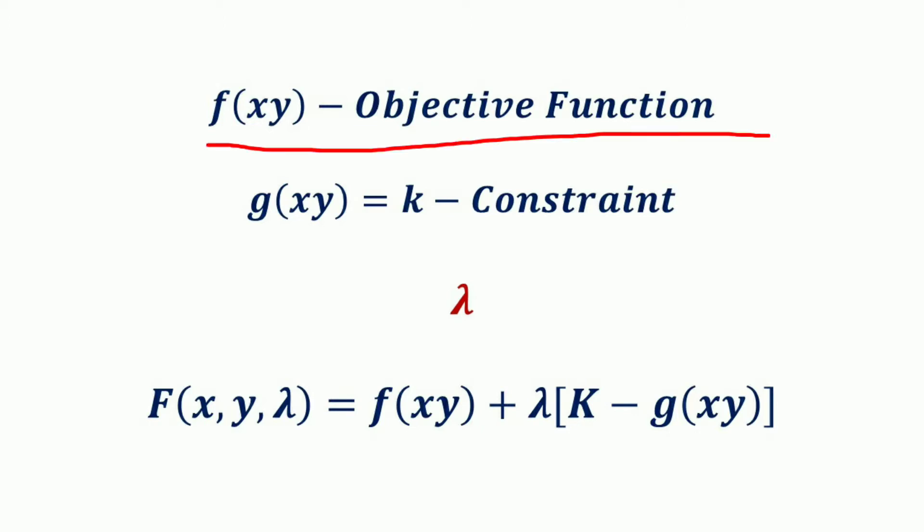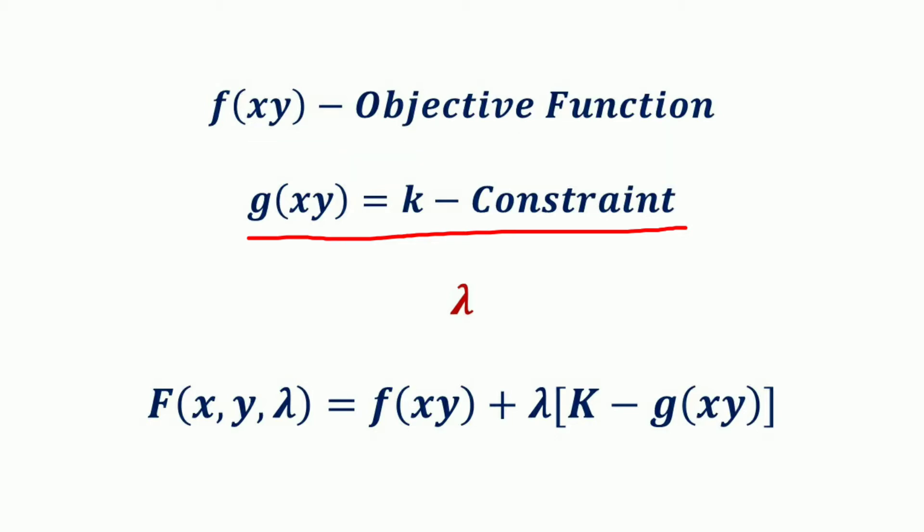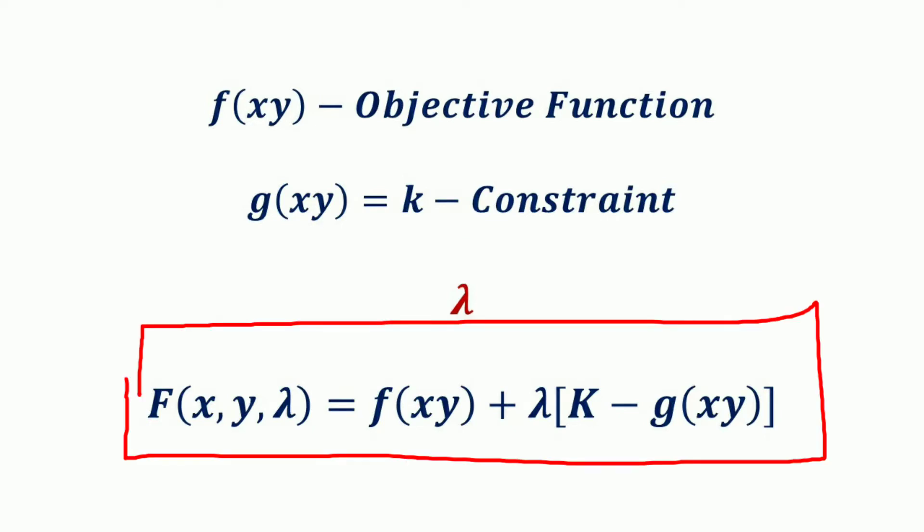Given objective function f(x, y) subjected to a constraint g(x, y) = k, where k is a constant. A new function can be formed by setting the constraint equal to zero and multiplying it by lambda, the Lagrange multiplier, and then adding the product to the original function.